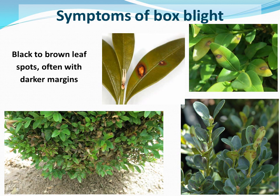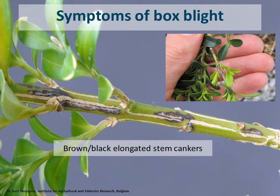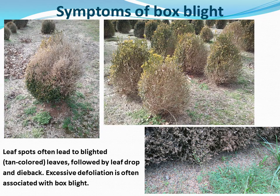Initial symptoms include black to brown leaf spots, often with darker margins. These spots can be seen on both the top side and underside of the leaves. Once leaf spotting occurs, brown to black elongated cankers develop on infected stems, often seen right before defoliation of the plant. These leaf spots eventually lead to blighted or tan-colored leaves, followed by leaf drop and twig dieback. Excessive defoliation is commonly associated with boxwood blight.